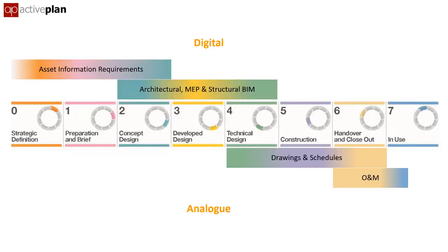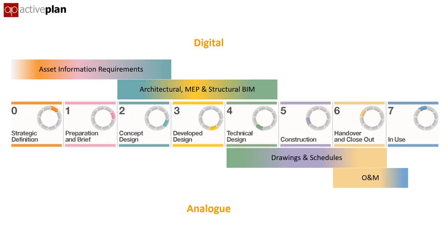Although designers use BIM and create digital models, most of the information used by contractors and installers is analogue — PDFs and printed files. Information about the products that were installed comes from specialist contractors and manufacturers. Few use 3D modelling, so they produce documents and PDFs, creating a disconnect from the data model.